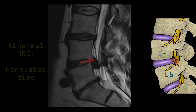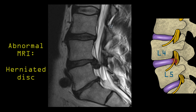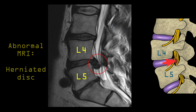In this MRI of the patient, you can see that a large piece of the disc between the L4 and L5 bones has squeezed out of place and is causing severe narrowing of the spinal canal. This is what a herniated disc looks like.